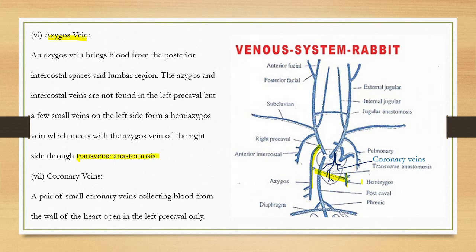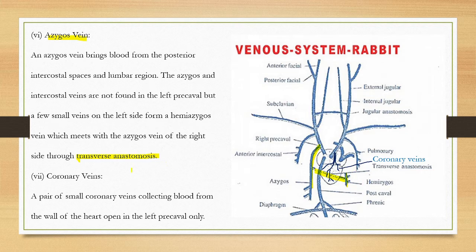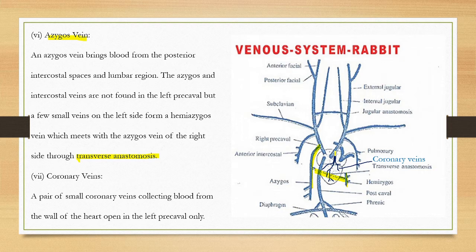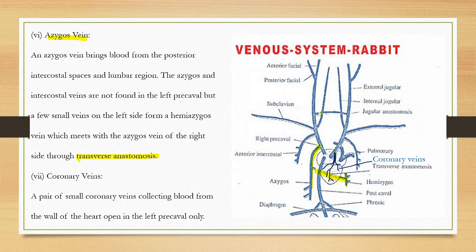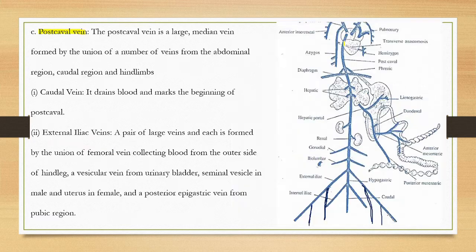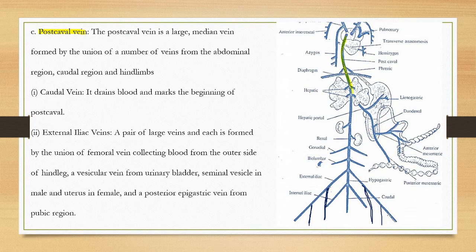The last one is the coronary vein. This is the coronary vein which drains the heart. The coronary vein joins the left precaval. The precaval veins then open into the right atrium.